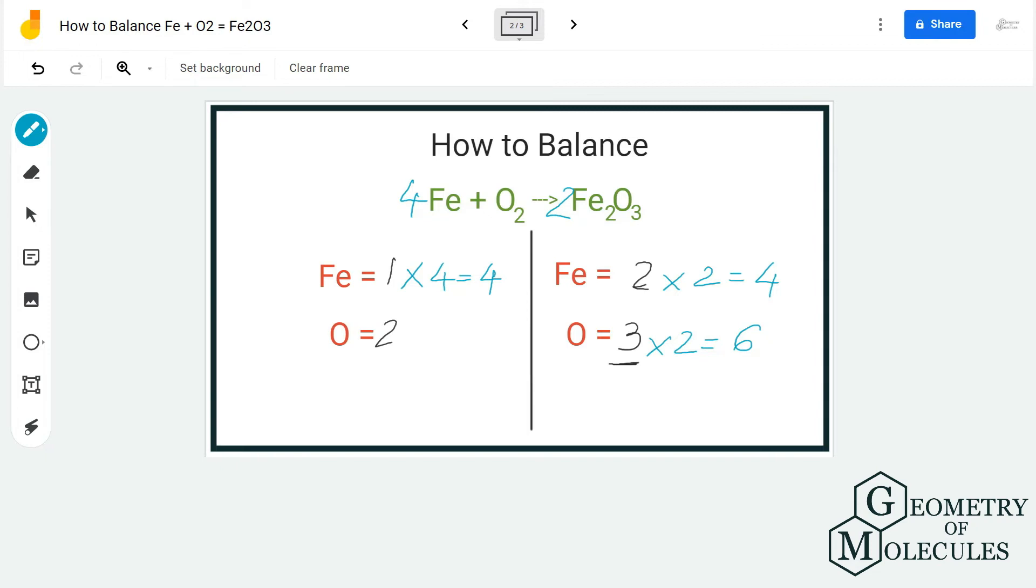And as you can see here, there are only two oxygen atoms. I'm going to put a three over here. So now I have four atoms of iron on both reactant and product side and six atoms of oxygen on both sides.